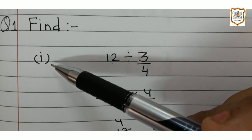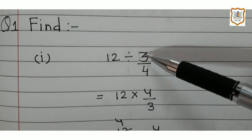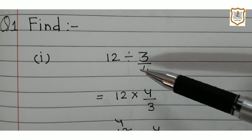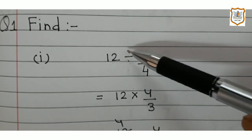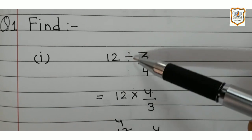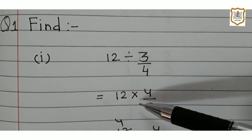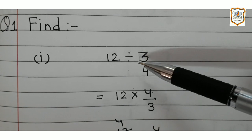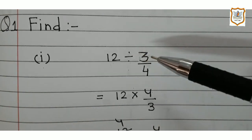The first part of question number 1 is 12 divided by 3 upon 4. When we divide two numbers, this division sign will be converted into multiplication sign and the reciprocal of the fraction after the division sign will be taken.